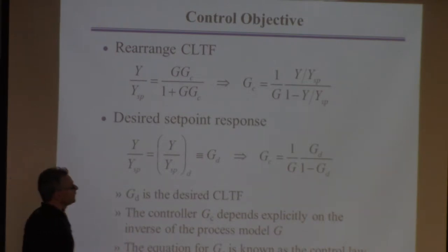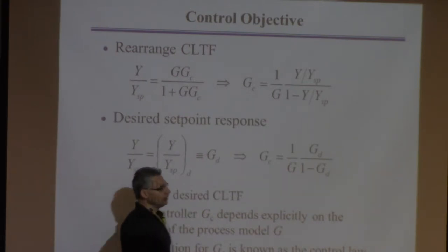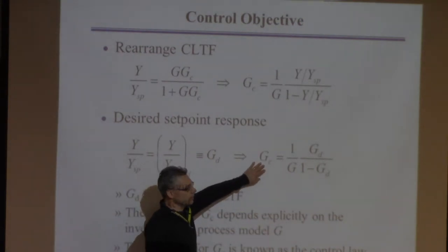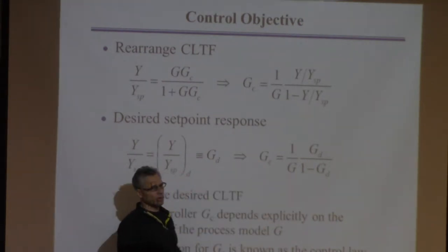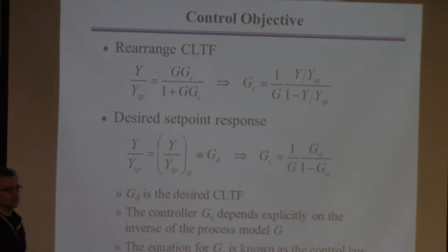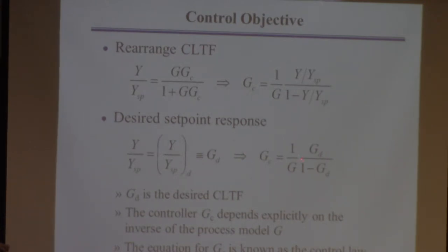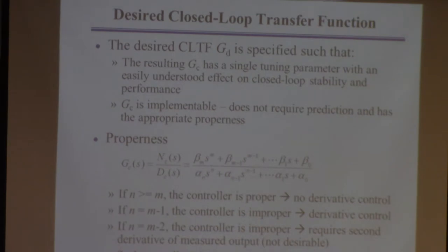This expression for Gc — we'll call it the controller transfer function, the control law, or the control algorithm. In order to implement it, you have to have G available, and I have to tell you what Gd is. The way the method works is: I give you a Gd, and then you can compute the controller.